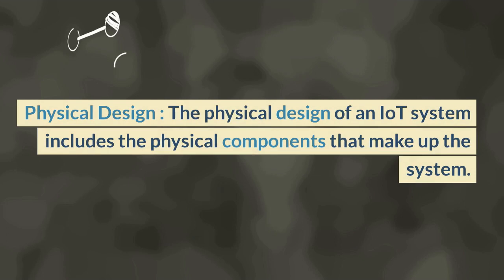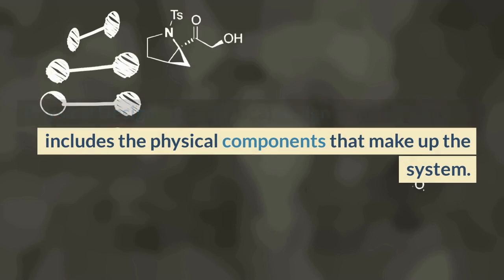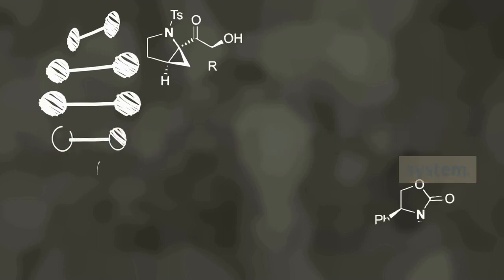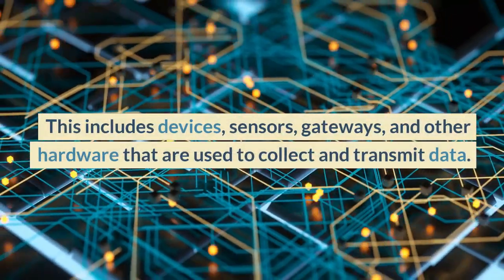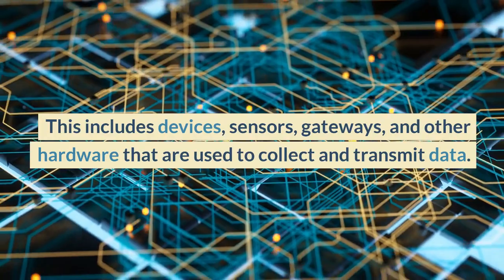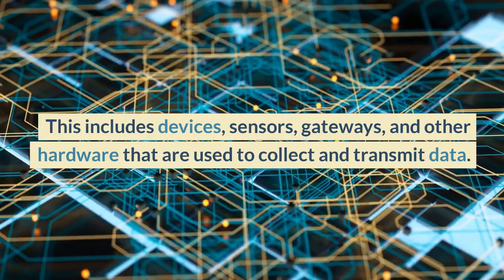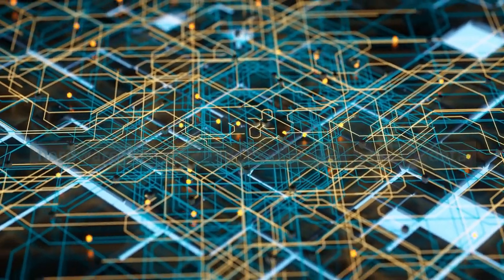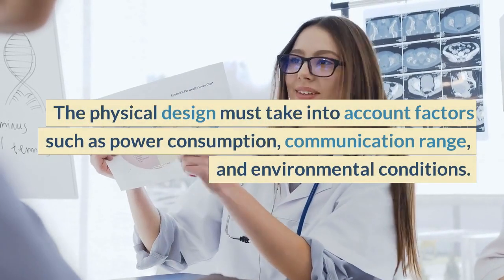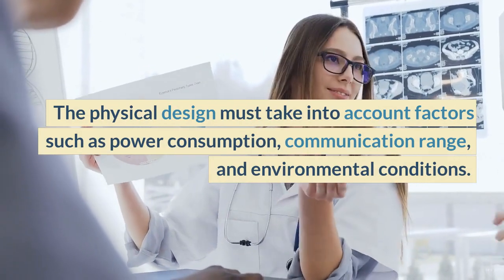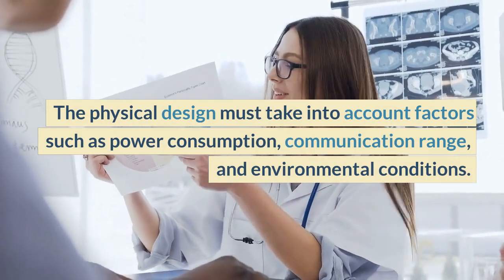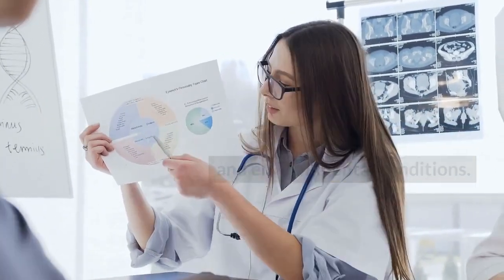Physical design. The physical design of an IoT system includes the physical components that make up the system. This includes devices, sensors, gateways, and other hardware that are used to collect and transmit data. The physical design must take into account factors such as power consumption, communication range, and environmental conditions.